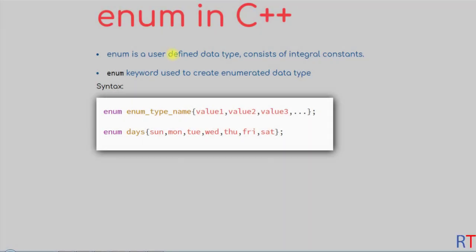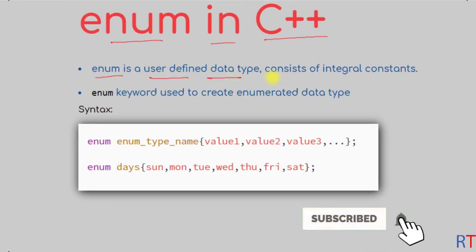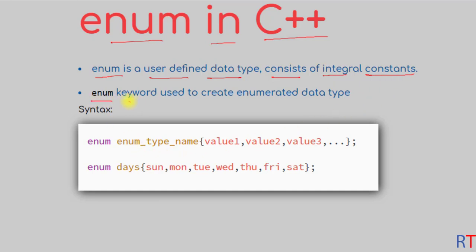In this video we're going to talk about enum in C++ programming. The enum is a user-defined data type that consists of integral constants, and the enum keyword is used to create an enumerated data type. The syntax is: first the enum keyword, then the enum type name, and then inside the curly braces we have the members of that enum — for example, we can create an enum called days.